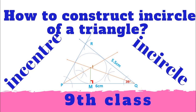First, draw a rough figure and show all the measures in it. Then construct triangle PQR of the given measures. Draw the angle bisectors of any two angles of the triangle — it is enough to draw angle bisectors of any two angles. Denote the point of intersection of angle bisectors as I. Draw perpendicular IM from point I to side PQ, preferably using a pair of compasses.